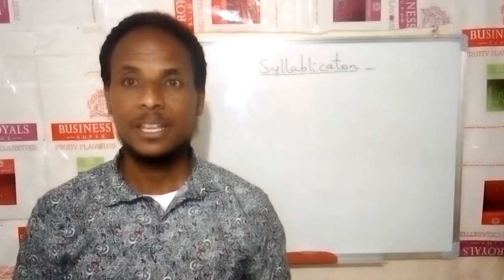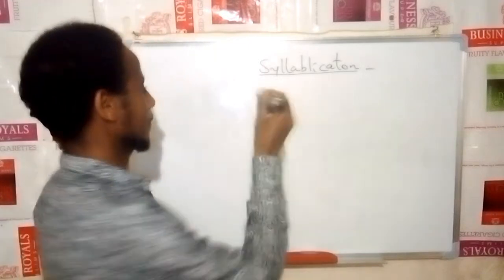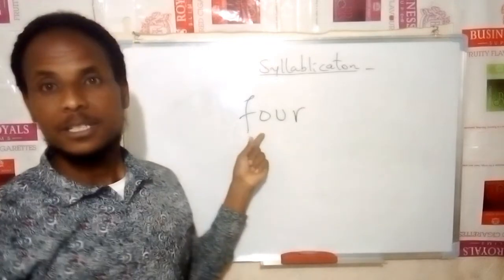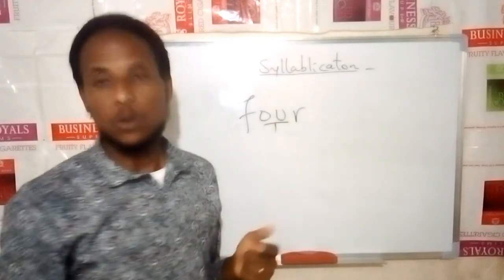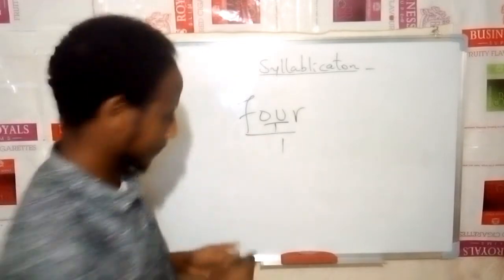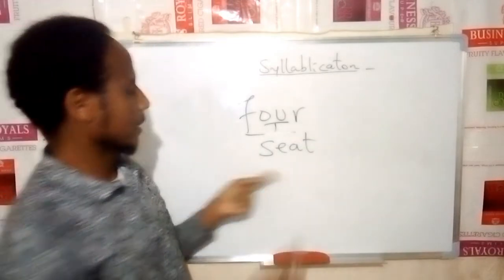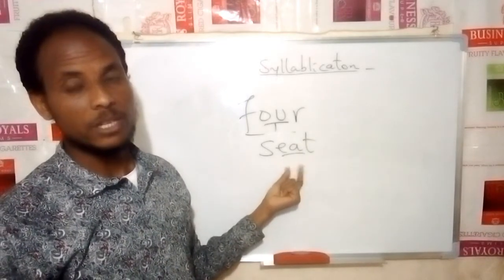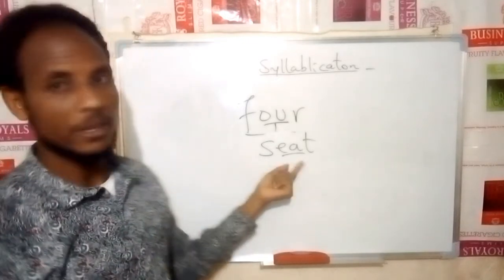Exception two: if there are two vowel sounds specifically placed adjacent to each other in a word, they are considered as one vowel sound. For example, the word 'for' has two adjacent vowels considered as a single vowel sound. Another example is 'sit' — the two vowels are positioned the same way, so it is also monosyllabic.